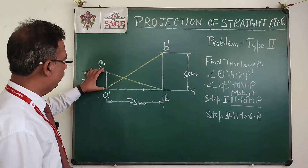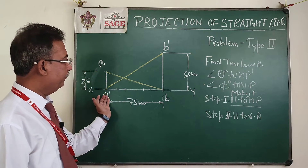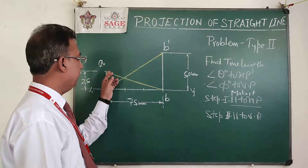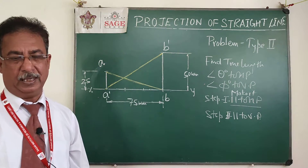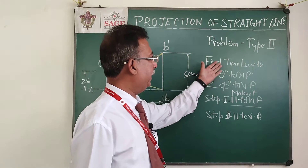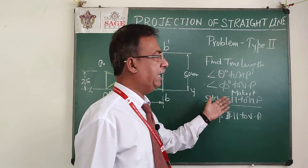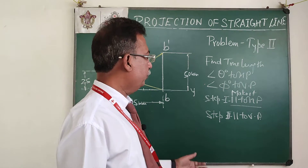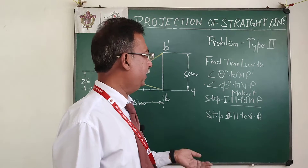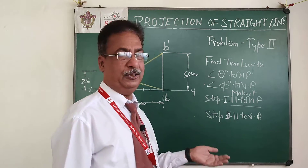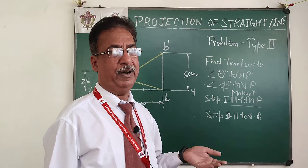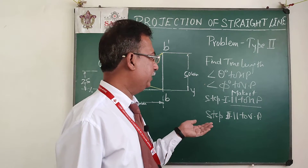According to the information I have plotted A dash, A, B dash, and B, and joined A dash with B dash and A with B to get the projection of the line. This line is inclined to both planes, so the question asks us to find the true length, inclination theta, and inclination phi. We get theta and phi when the line is parallel to one of the reference planes — when parallel to HP we get phi in the top view.